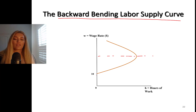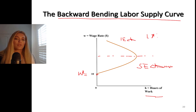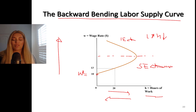So on the backward-bending labor supply curve: let's say your reservation wage is ten dollars. You start supplying hours of work in the market. At the lower part, the substitution effect dominates. At the upper part, the income effect dominates — you're richer, so leisure goes up and hours go down. At first as wages go up hours will go up, and then they will go down based on income and substitution effects.